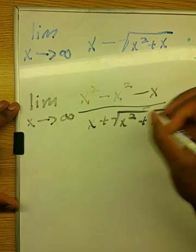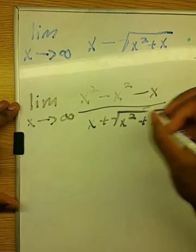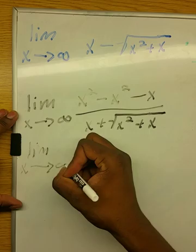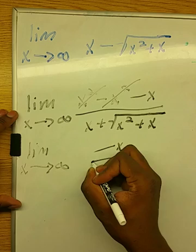And this can be simplified a little bit to be the limit as x approaches infinity and these will actually go away. Negative x over x plus the square root of x squared plus x.